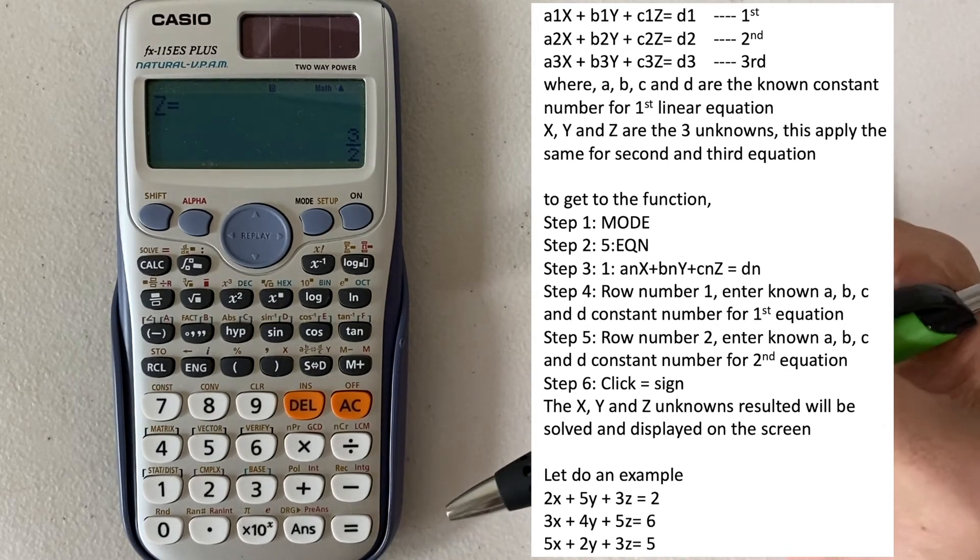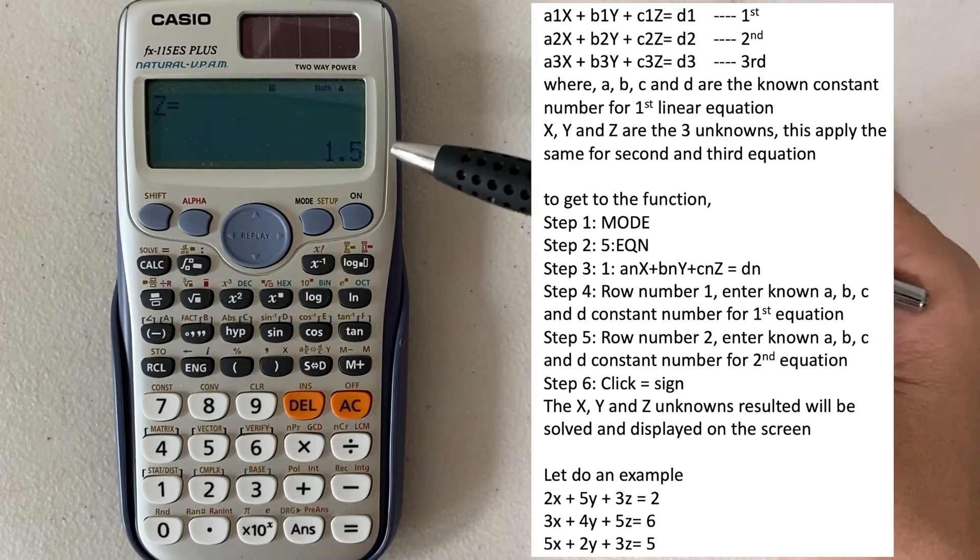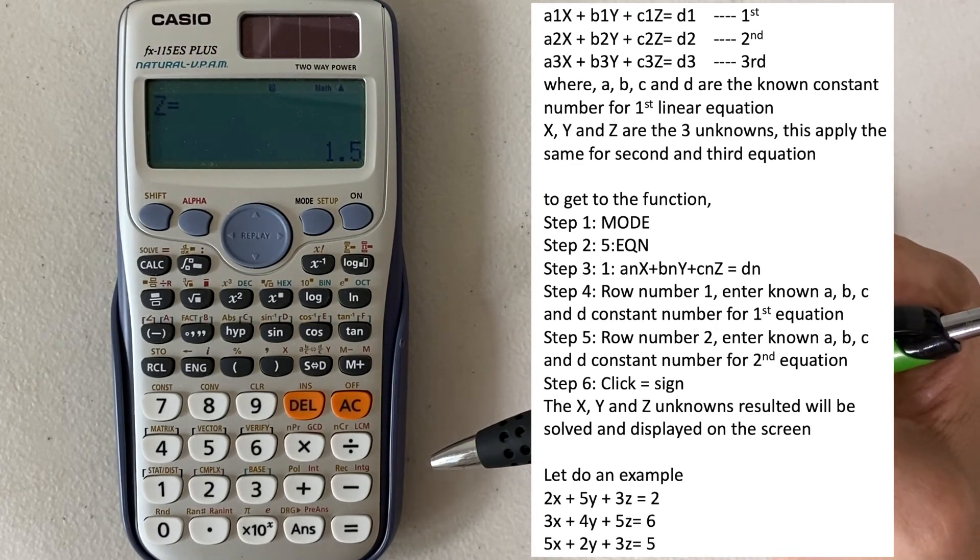And then the last one is Z, 3 over 2, and it's 1.5 as a decimal.